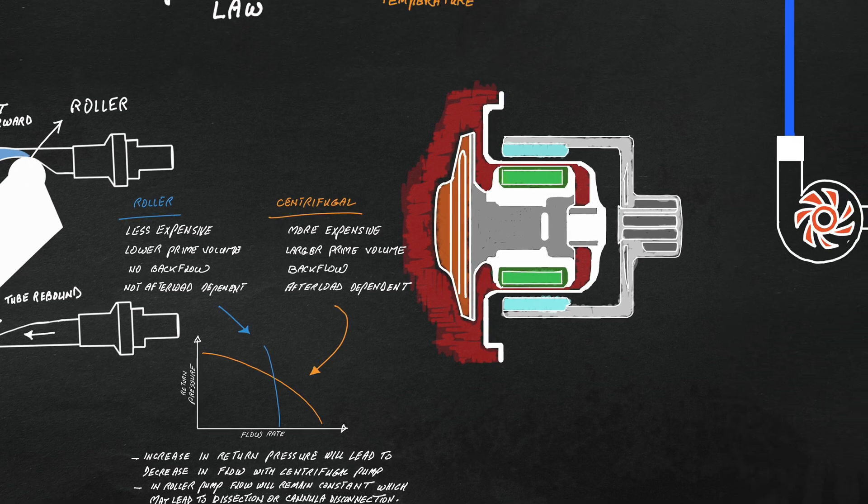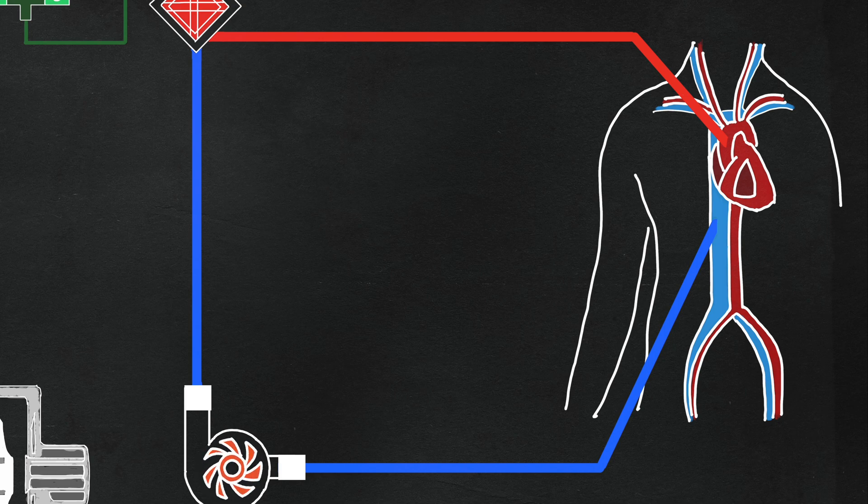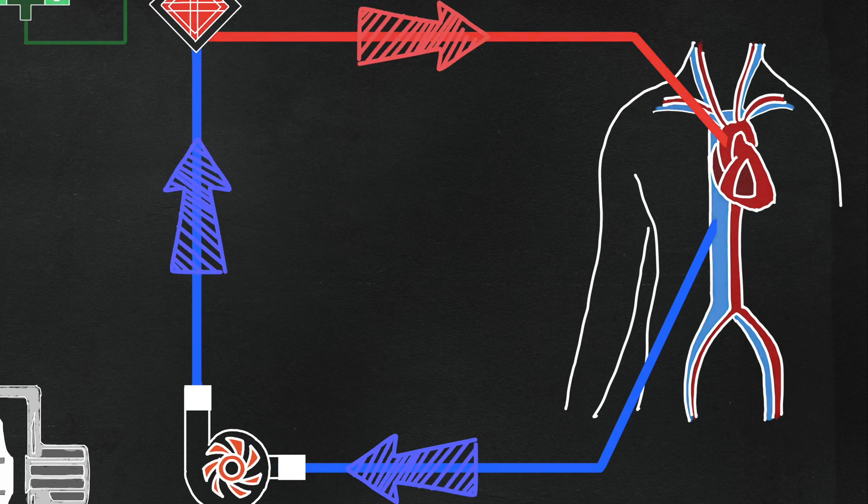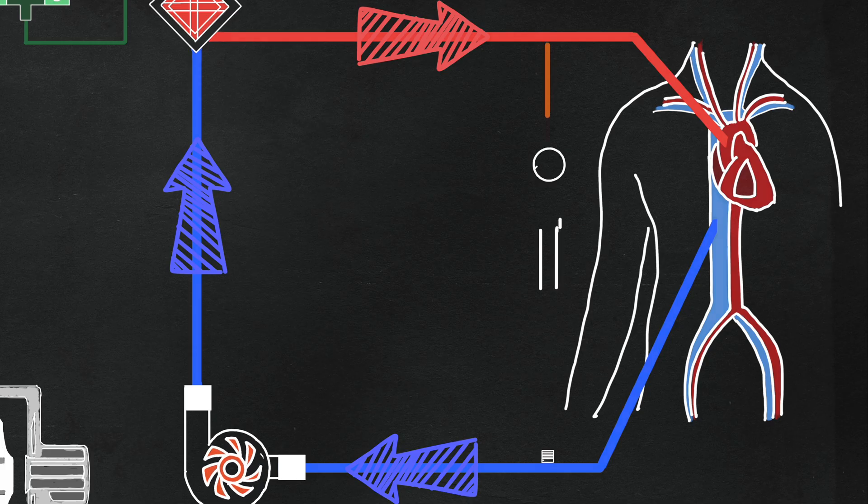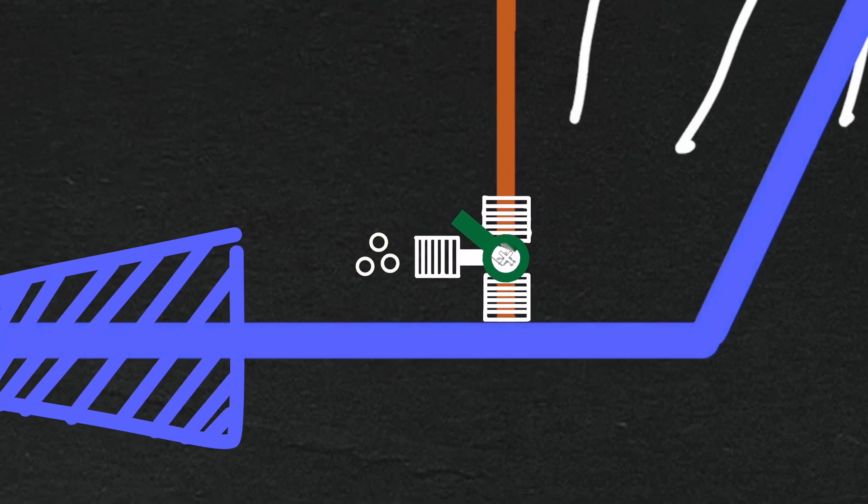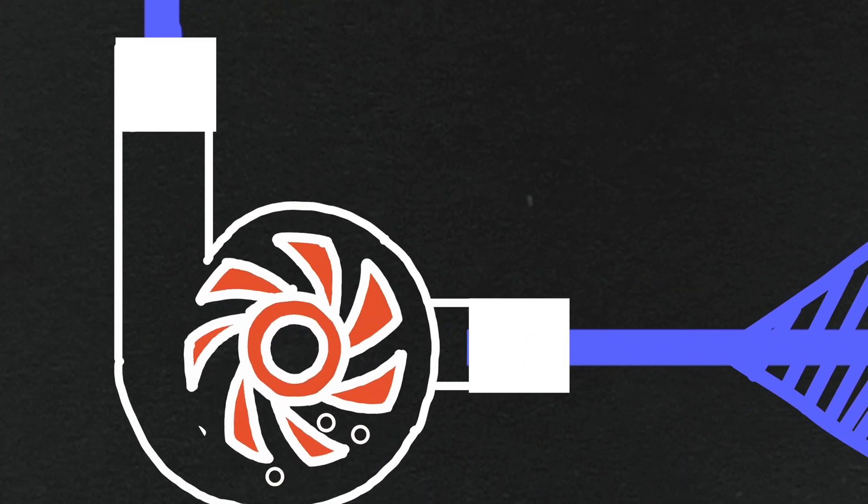Unlike bypass machines, ECMO circuits do not have venous reservoirs, which results in an increased risk for air emboli. Therefore, it's very important to take precautions during the process of hooking up the dialysis machine to the ECMO circuit. You may want to reduce ECMO flow for a short time to minimize negative pressure in the venous cannula and help minimize the risk for air emboli during dialysis machine connection to the circuit.